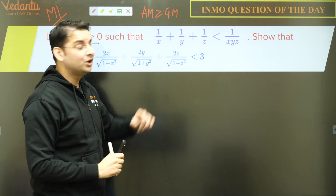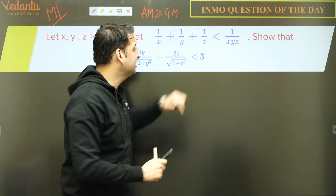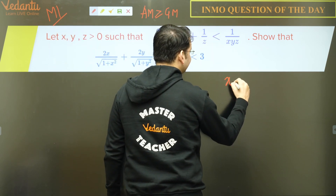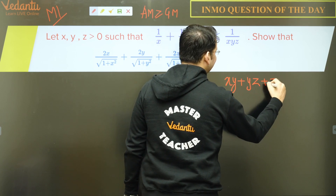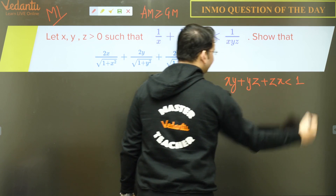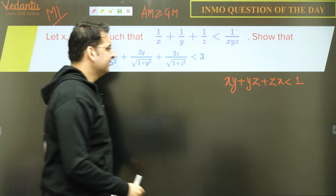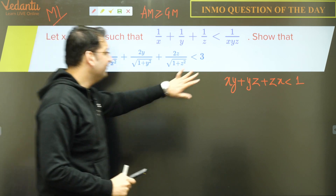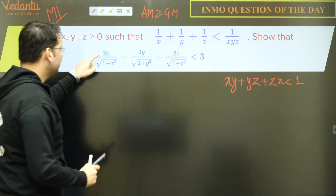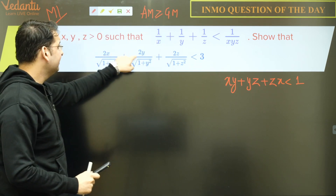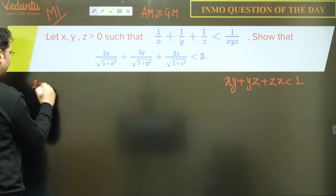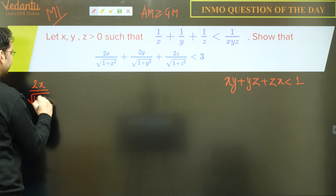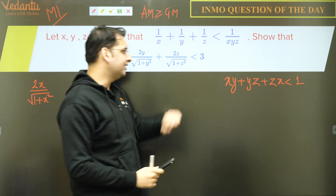So this is what we have. Now, if we pick any one of these three expressions — say 2x/√(1+x²) — how can we make use of this result? We can replace the 1 inside with something. We know 1 is greater than xy + yz + zx, so the expression will be definitely less than 2x/√(xy + yz + zx + x²).